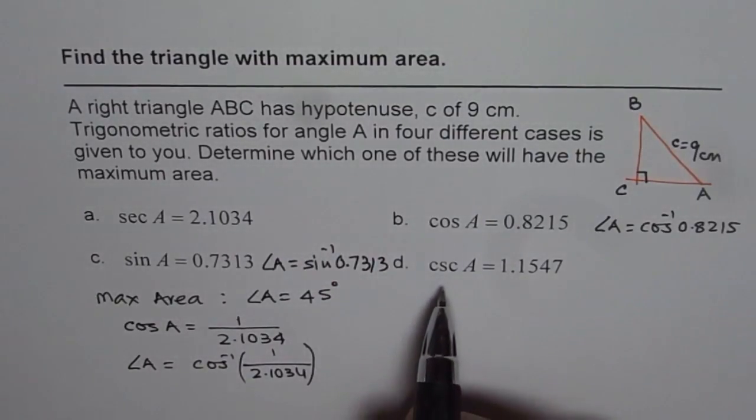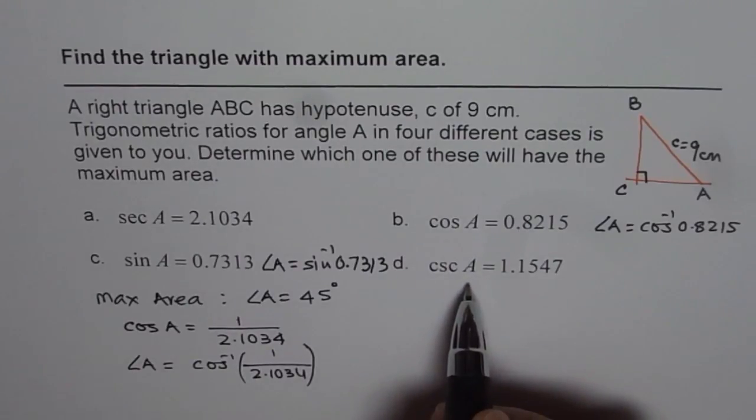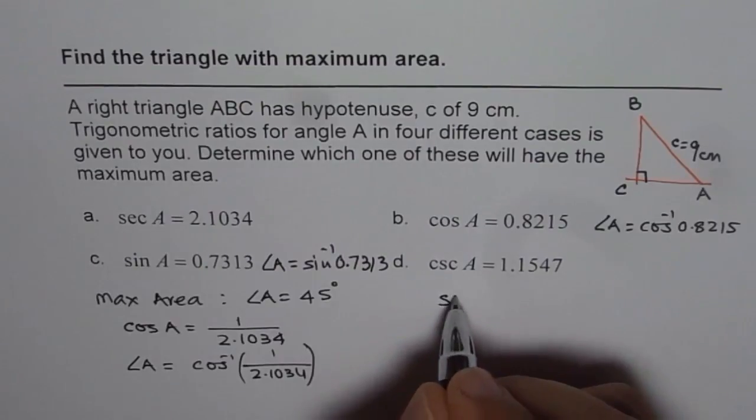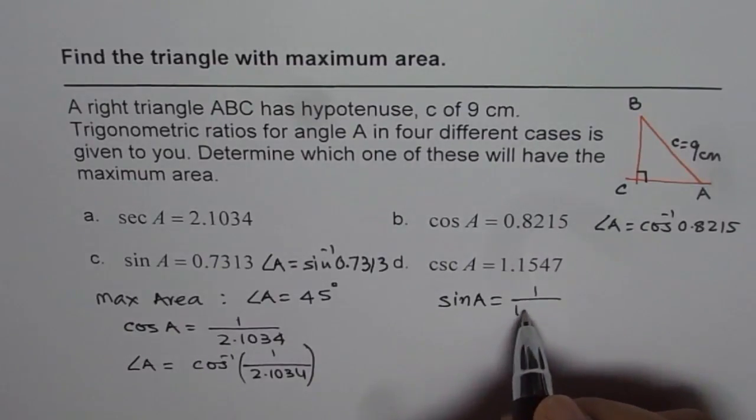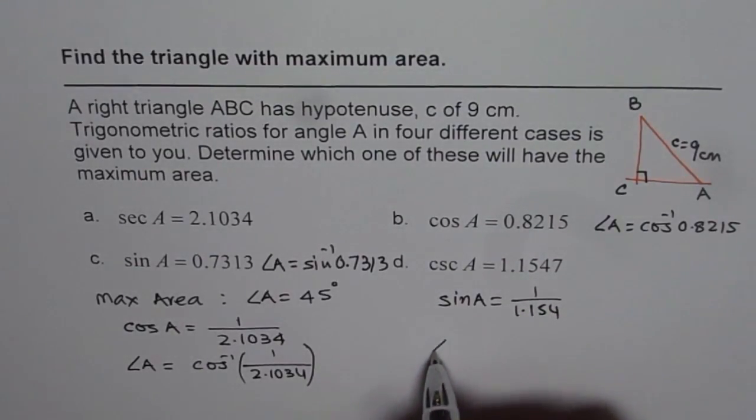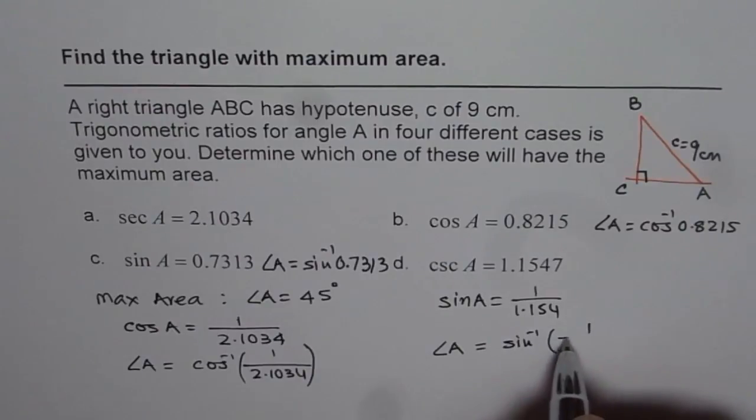The last case is cosecant A. Now, cosecant A is reciprocal of sin, right? So here we can find what sin A is. Sin A is 1 over cosecant A, which is 1.1547. And then you can calculate the value of angle A as sin inverse of 1 over 1.1547.